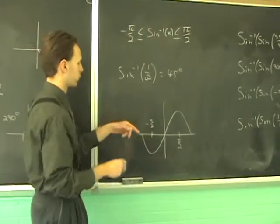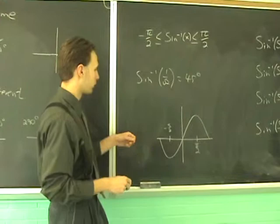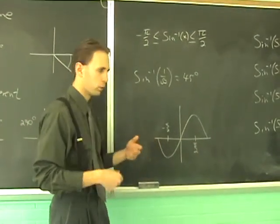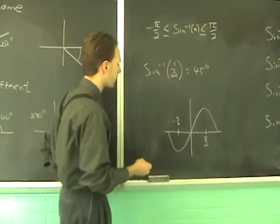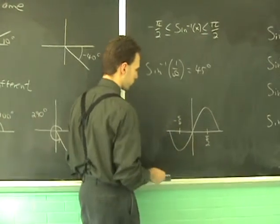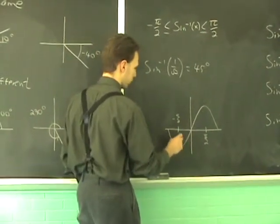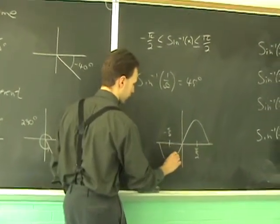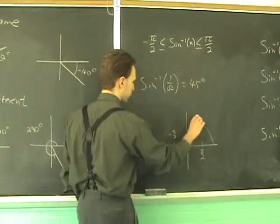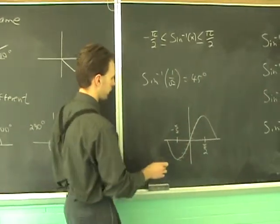And you can see why if you think about invertibility and what it means for a function to be invertible. The sine function is invertible on this interval here. It passes the horizontal line test for x values between minus pi over 2 and pi over 2.